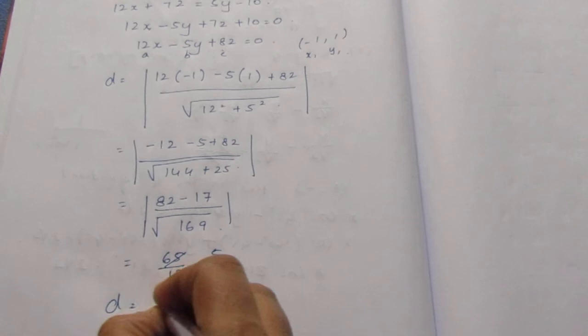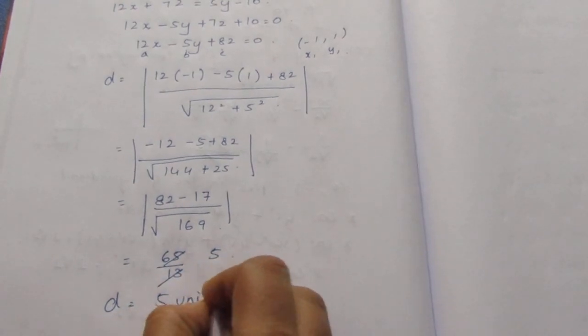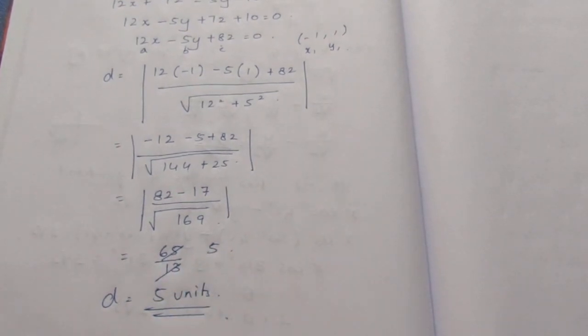So distance is equal to 5 units. This is your final answer for the sum. That's all with the sum. Thank you.